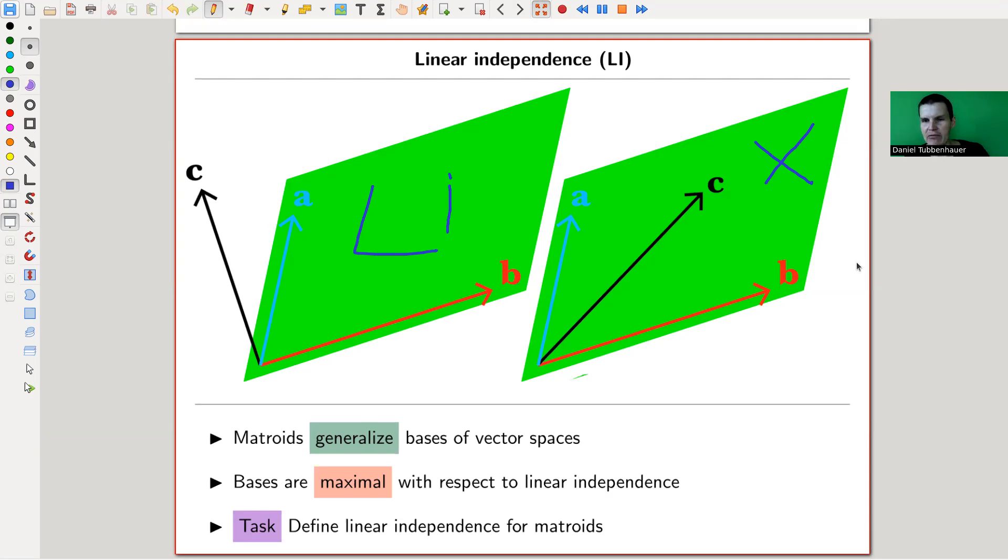And last time I tried to convince you that matroids generalize vector spaces because there's a matroid given whose bases are exactly bases in a vector space. And the only thing I observe now here is that there's a notion called linear independence, which you all know very well from linear algebra, which clearly is related to bases. Namely, the bases are the maximal linear independent sets. It's an alternative definition of a basis.